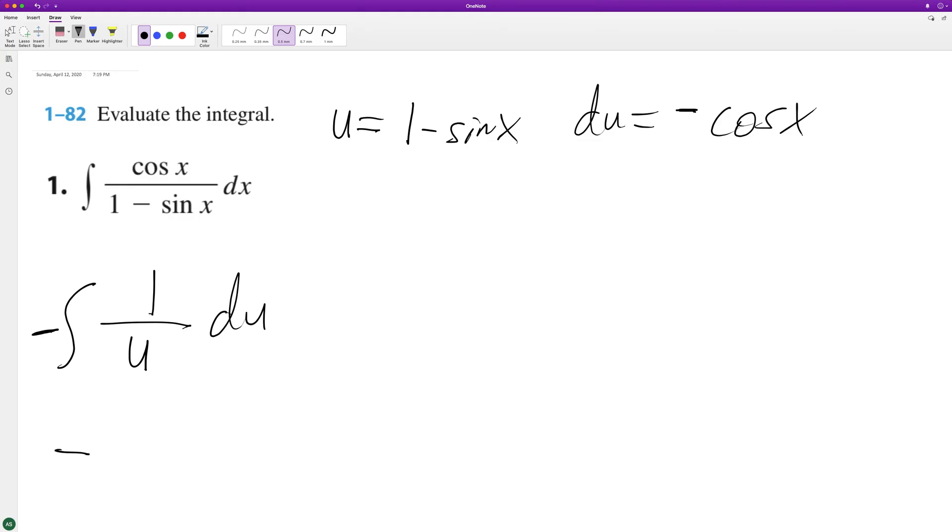So when we integrate this we get negative natural log of u plus c, and then we just substitute back in. So we get negative natural log of 1 minus sine of x plus c, and that's it.